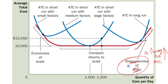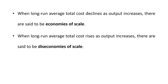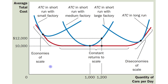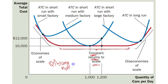When output level increases and long run ATC also increases, this portion is known as diseconomies of scale. And when long run average total cost does not vary with the level of output, there are said to be constant returns to scale — when the long run ATC remains constant as output increases, that portion is known as constant returns to scale.